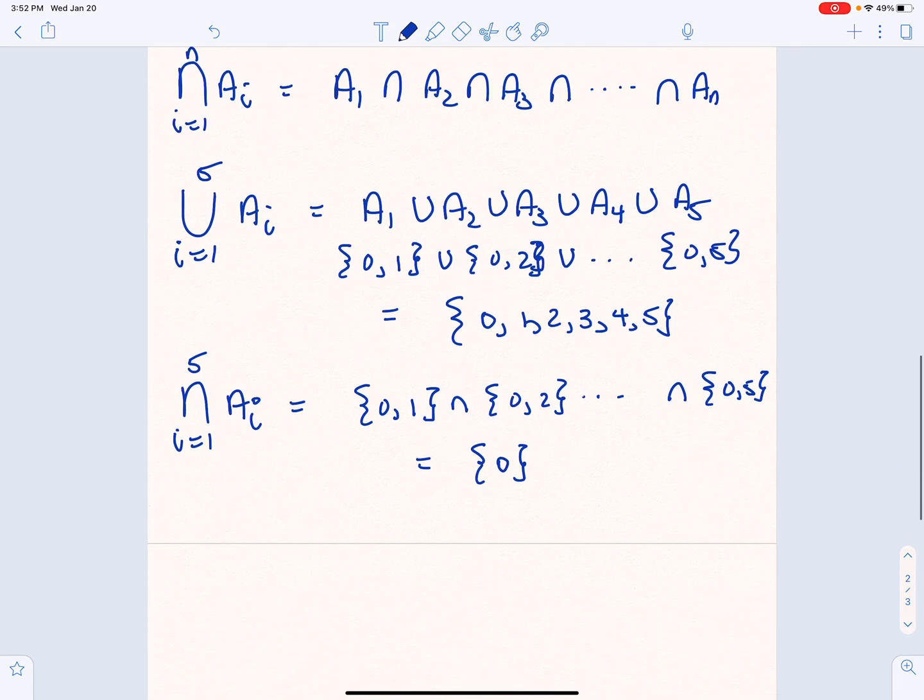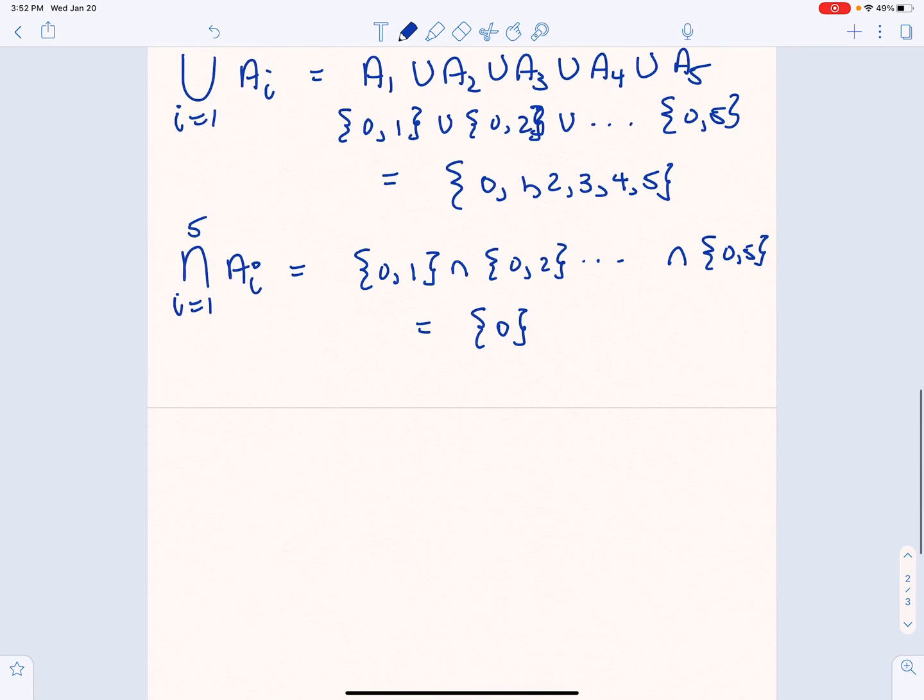So one thing we could talk about is going infinite. What if we wanted the infinite intersection of all of those sets? Well, as you can see, every set that's listed is going to contain a 0. So that means that the intersection is just going to be {0}.